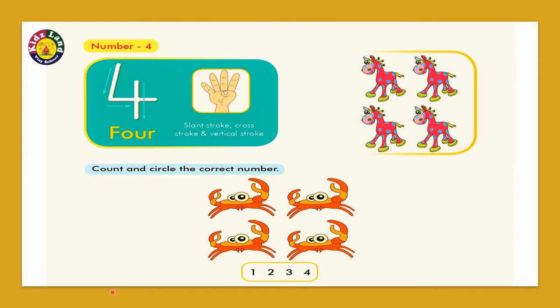How do we write number 4? One standing line, sleeping line, lift your pencil, another sleeping line, lift your pencil. Again, one standing line, one sleeping line, lift your pencil, and a standing line. You can watch the arrows also here.